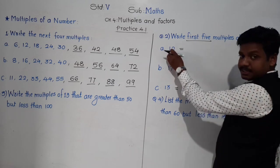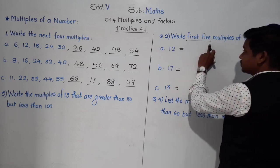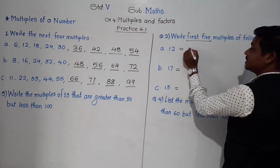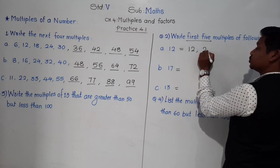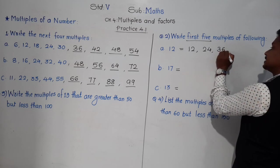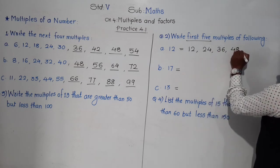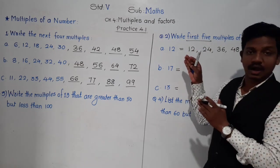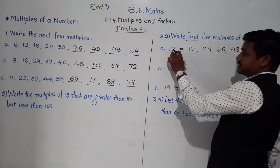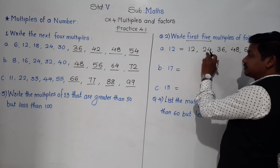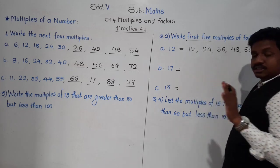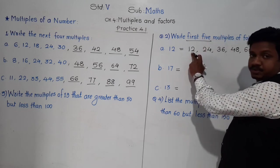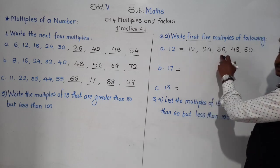While writing the first 5 multiples of 12, you must start with 12×1. Some students make the mistake of skipping 12 and writing 24, 36, 48 directly — that is not the proper sequence. Start with the first multiple: 12×1=12, 12×2=24, 12×3=36, 12×4=48, 12×5=60.